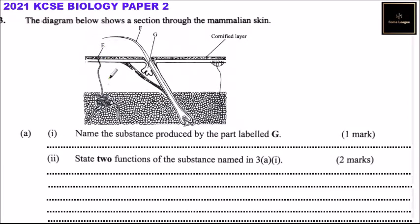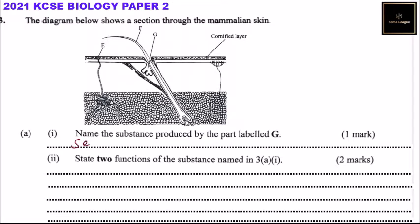Part A, roman numeral one: name the substance produced by the part labeled G. G is the sebaceous gland, and it produces a substance known as sebum. Sebum is an oily, waxy substance produced by the sebaceous gland.